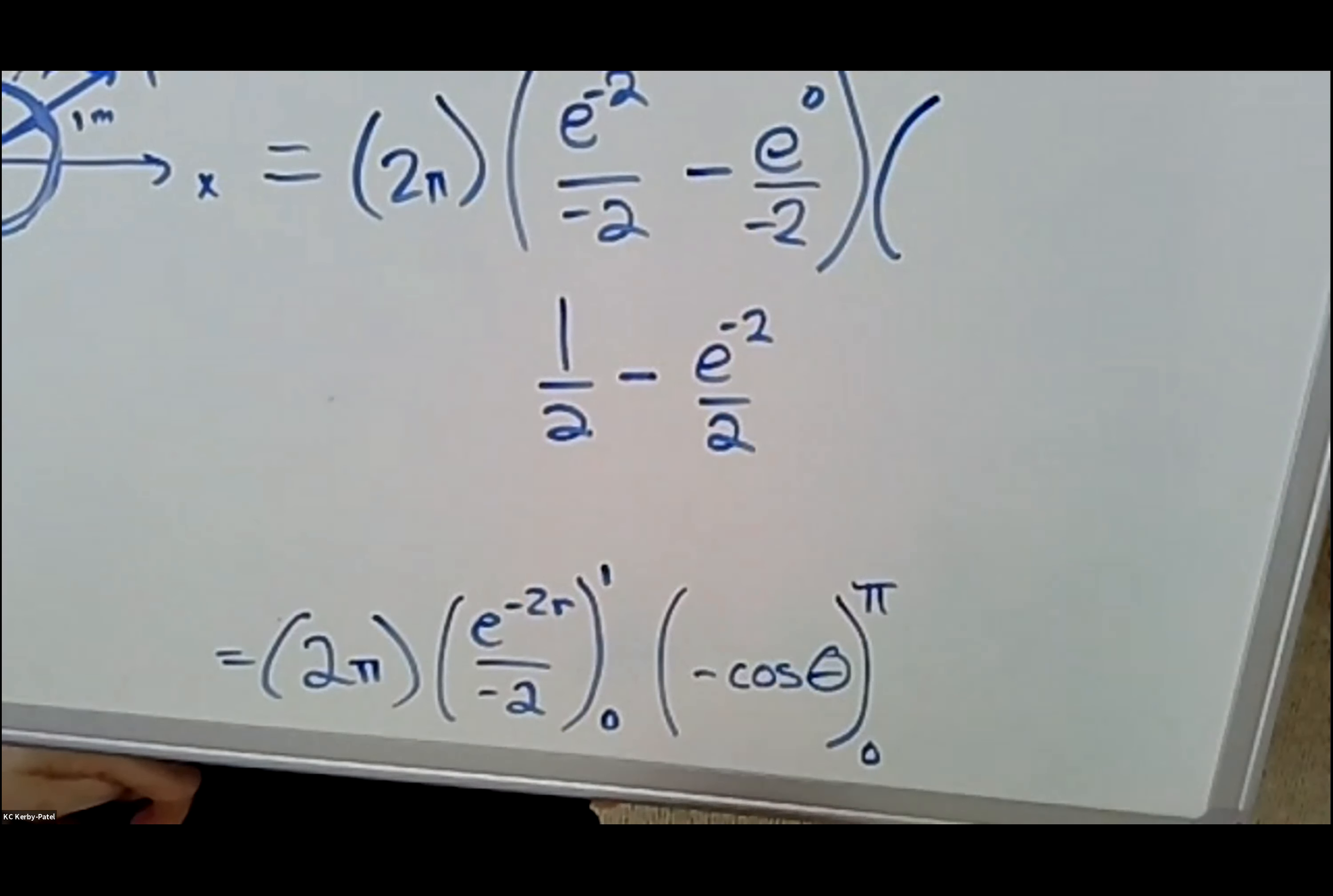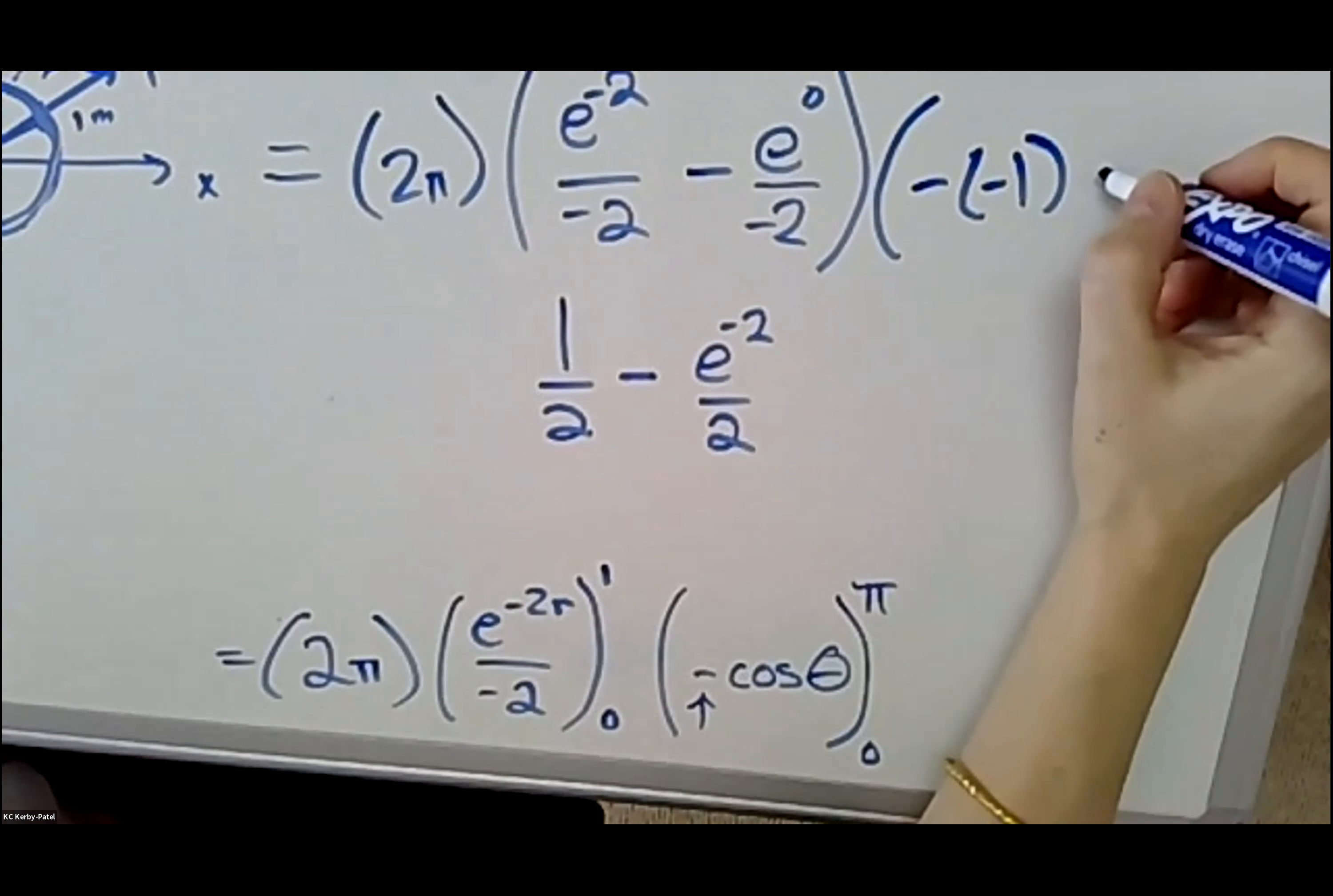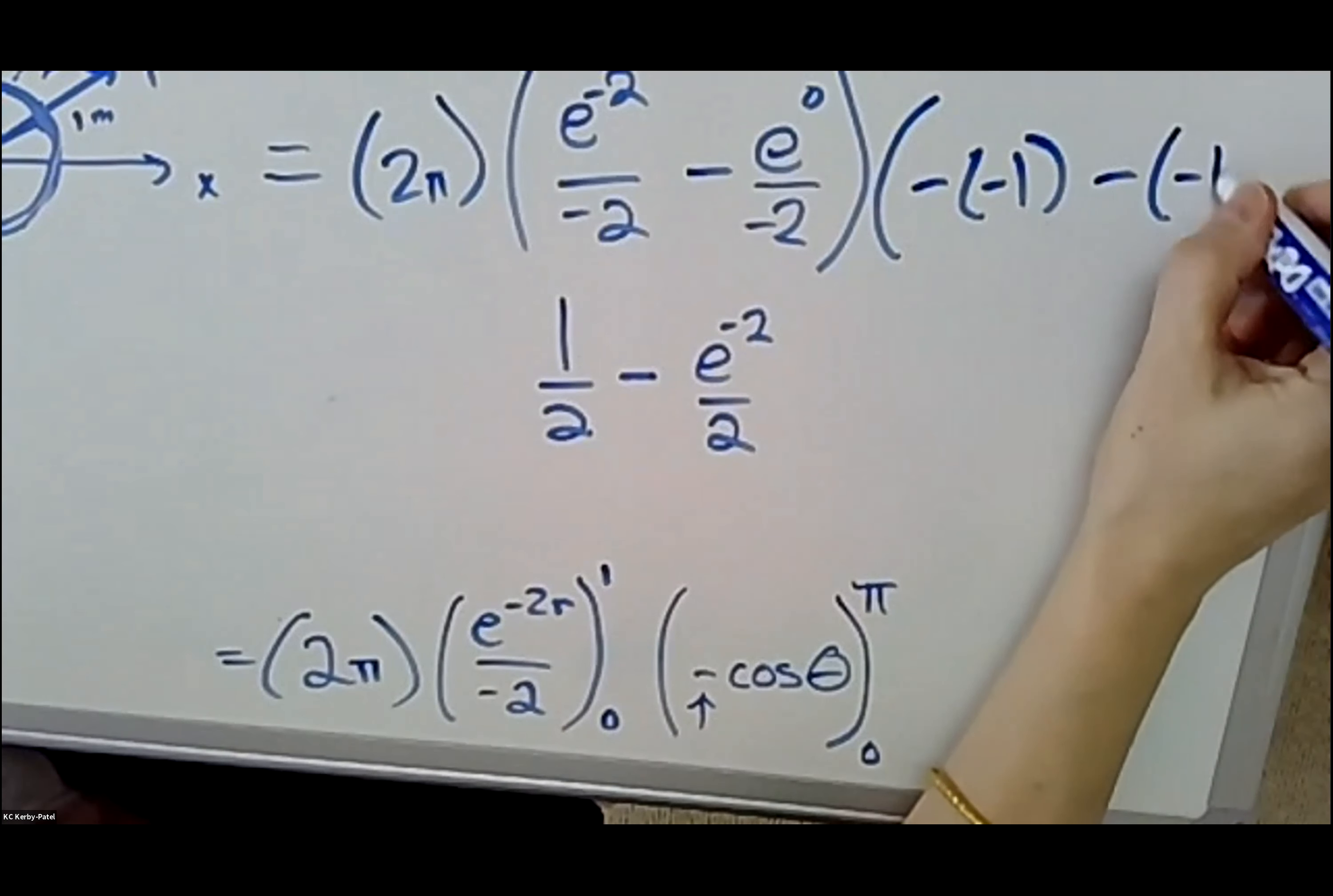Lastly, cosine theta evaluated from zero to π is minus—minus one. Sorry, not cosine theta, minus cosine theta. That's a key minus sign right there. Minus minus one—which you get two.